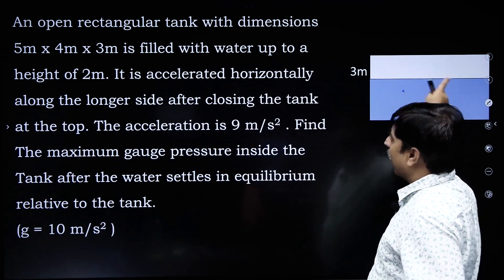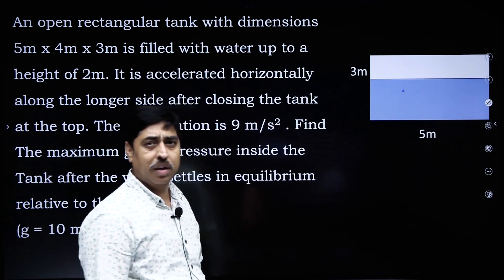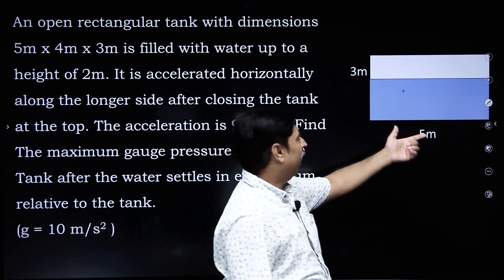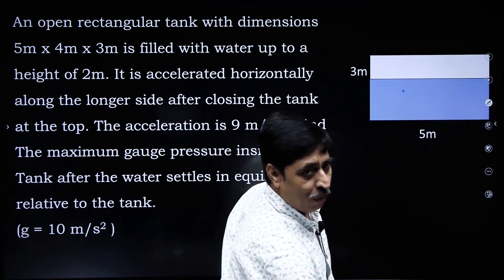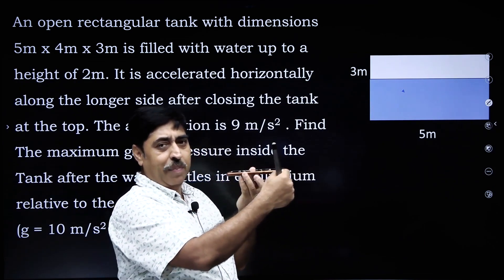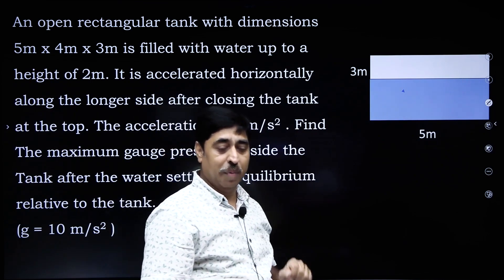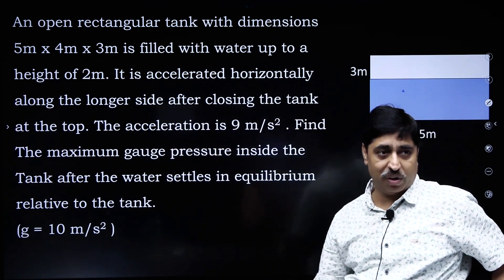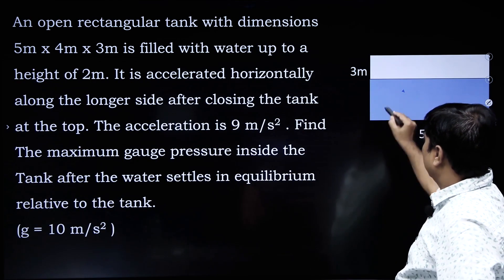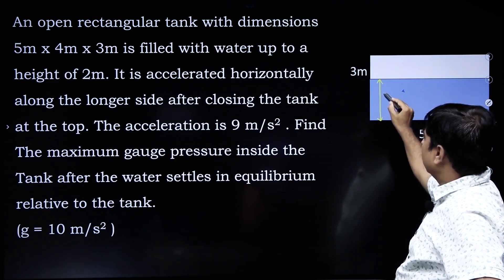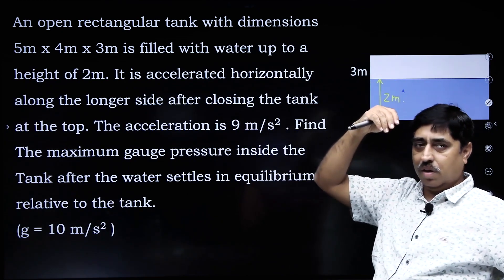Here is the question: there is an open rectangular tank with dimensions 5 meter, 3 meter, and the depth is 4 meter. So if you look at the tank from the top, there is 5 meter, 4 meter, and the height is 3 meter. The tank is open at the top. It is filled with water up to a height of 2 meter, so this blue colored thing is water and this height is 2 meter. So 1 meter is basically air.